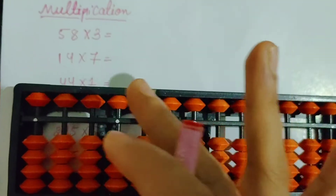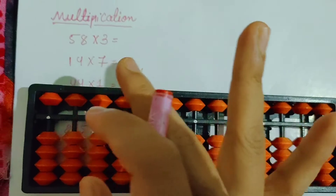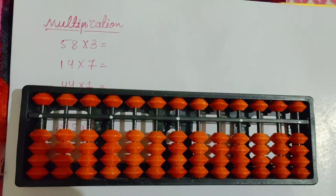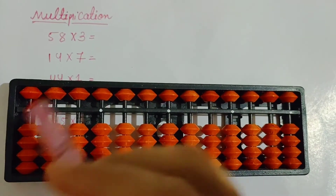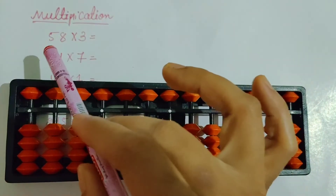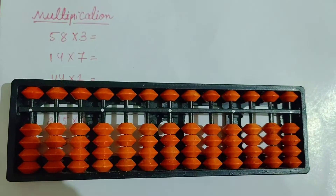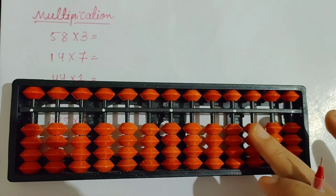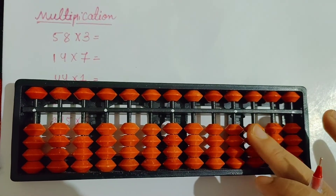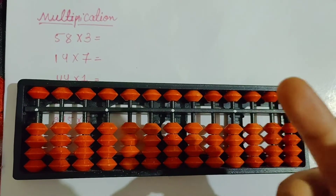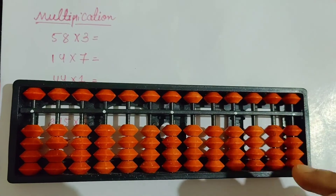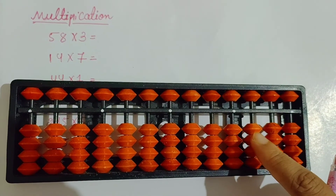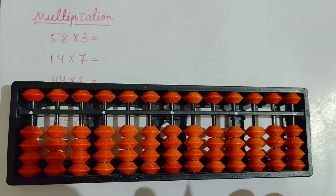So first the rule is: how many digit question is there? First you have to see. So here total 1, 2, 3 digit question means you will start the answer from the third row. Understood? 3 digit question is there, so you will start the answer from third row.